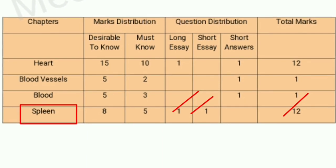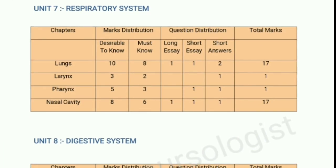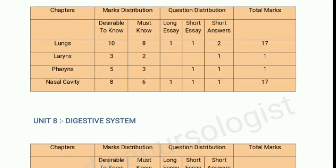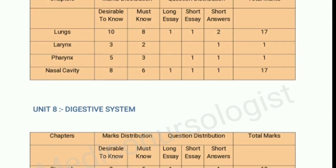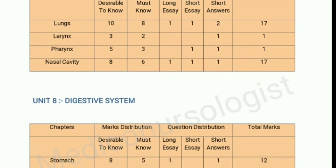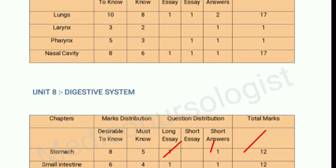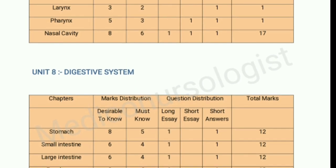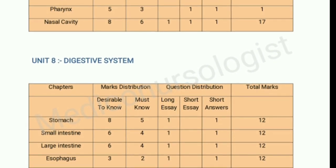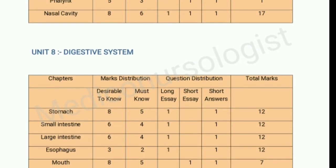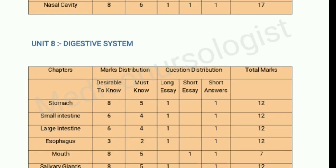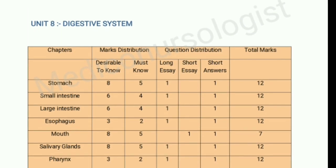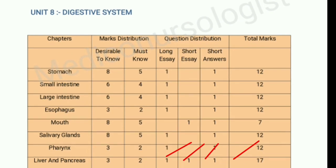Unit 8 is the digestive system, which has eight chapters: stomach, small intestine, large intestine, esophagus, mouth, salivary glands, pharynx, liver, and pancreas. Stomach, large intestine, small intestine, and esophagus each carry 12 marks — 1 question for 10 marks and 1 question for 5 marks. The mouth chapter carries 7 marks with 1 question for 5 marks and 1 question for 2 marks. Salivary glands and pharynx chapters also carry 12 marks each, with 1 question for 10 marks and 1 for 2 marks. Liver and pancreas carry 17 marks — 1 question for 10 marks, 1 for 5 marks, and 1 for 2 marks.